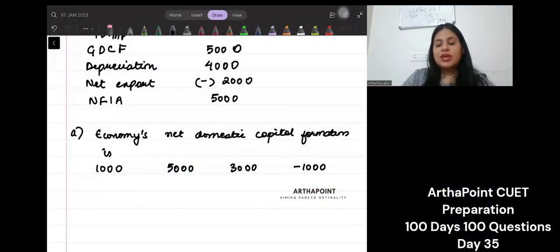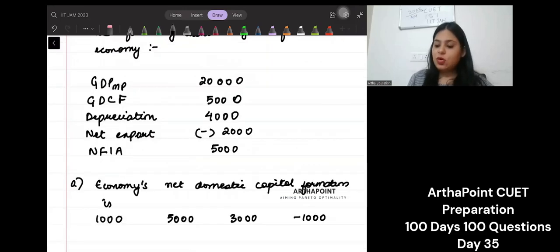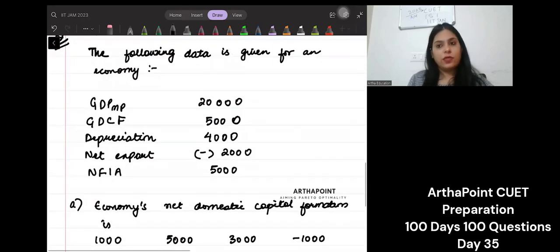Hi, good evening everyone. Let us go ahead and do this next question. It says that the following data is given for an economy. What is the data given to you?